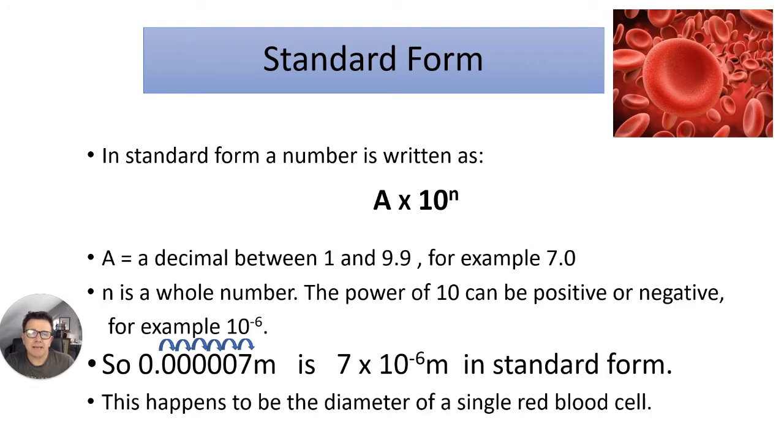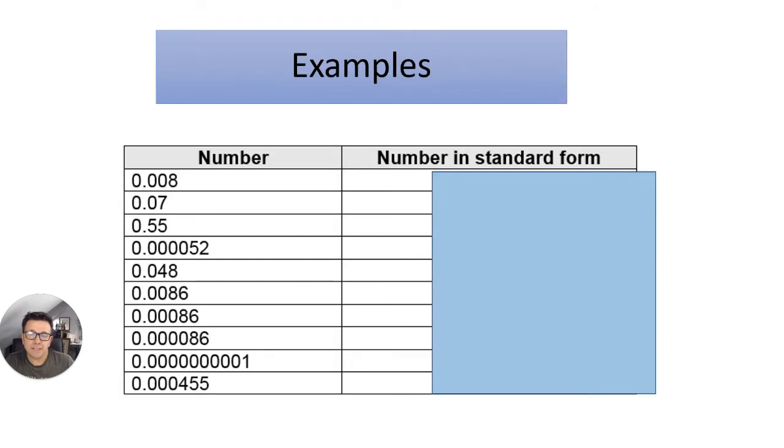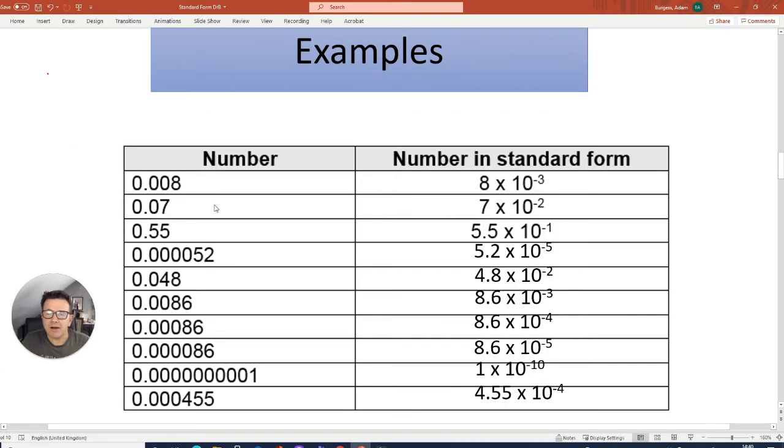Here's some examples and I'm going to give you a few moments to have a go at these. Pause in 3, 2, 1. Okay, here are the answers. The first one is 8 times 10 to the minus 3. I'll use my pointer to show you how I came up with that. You can see it goes 1, 2 and 3 because A has to be a whole number. So it's 8 times 10 to the minus 3.